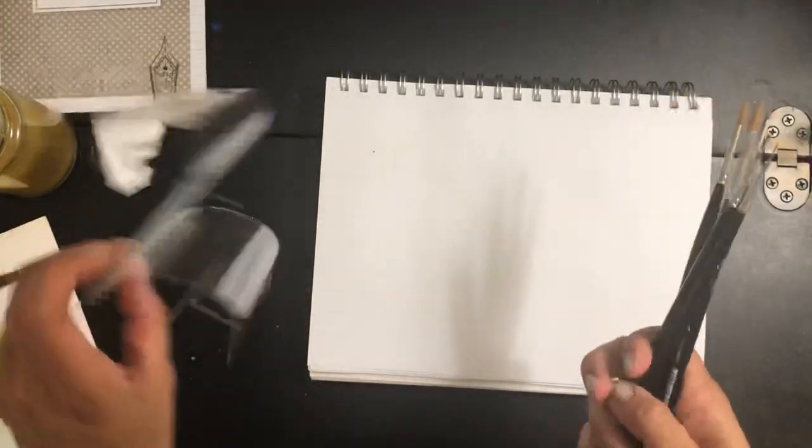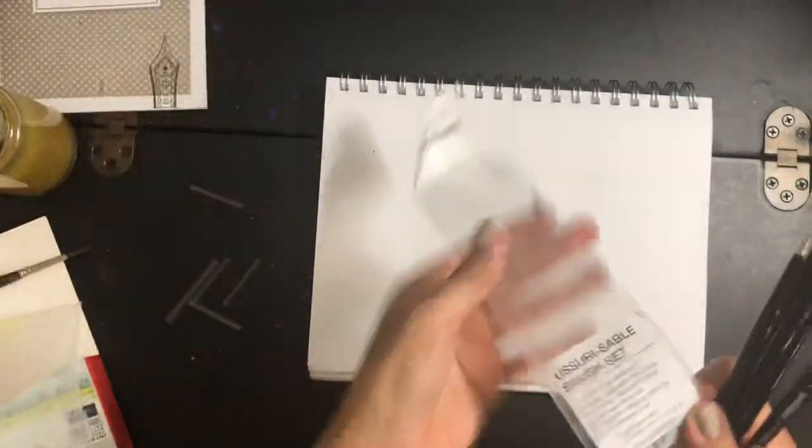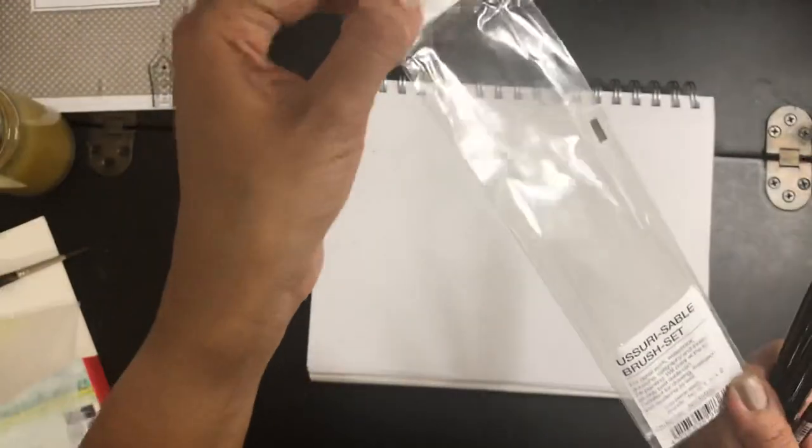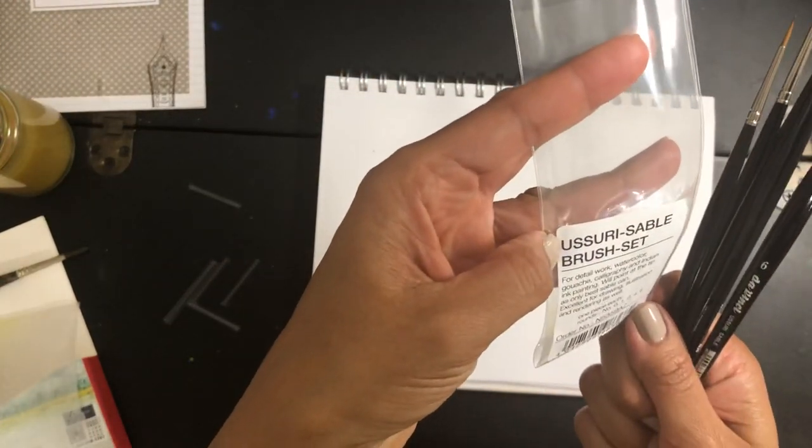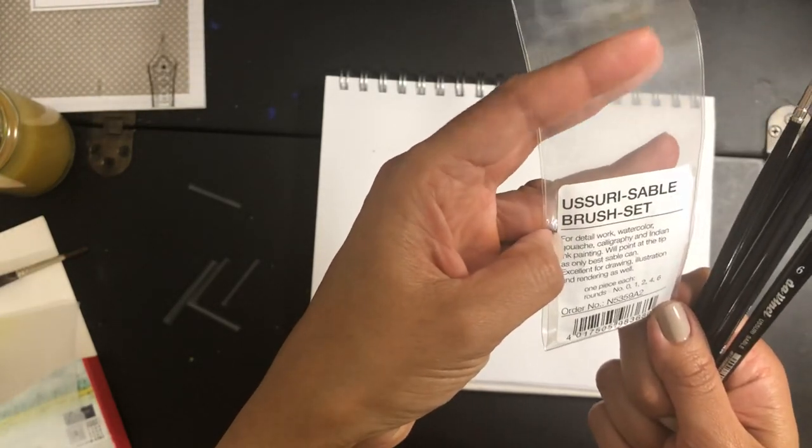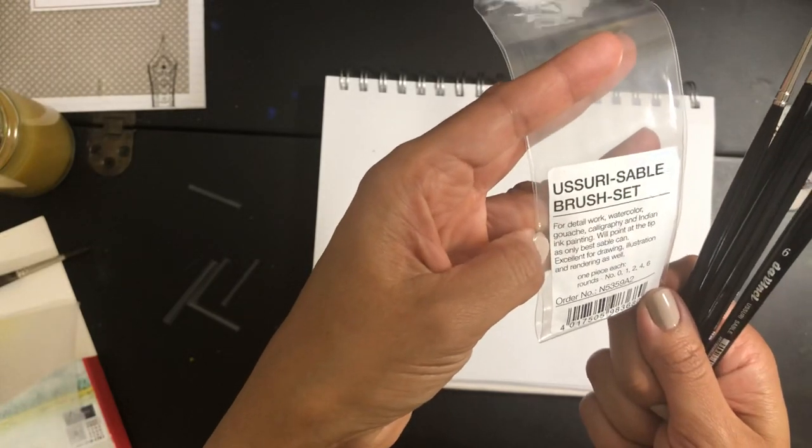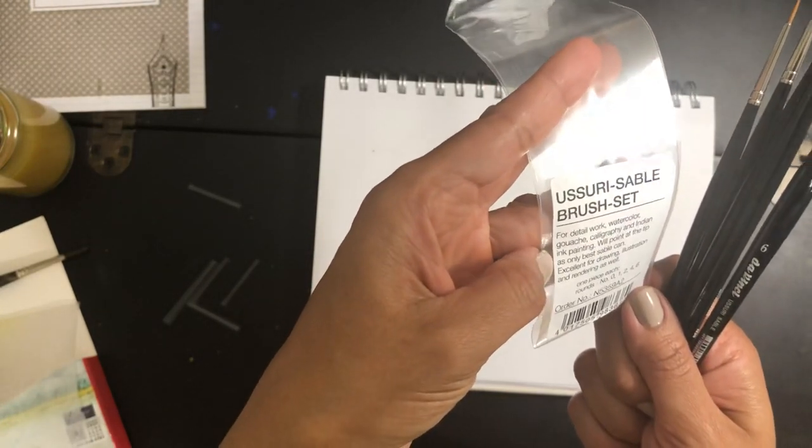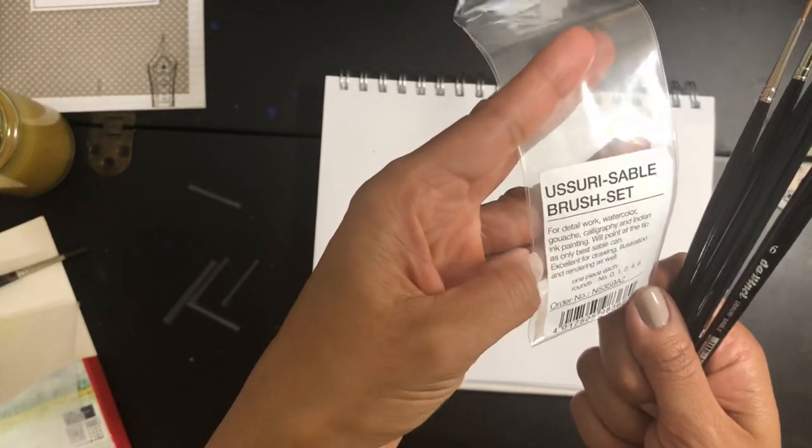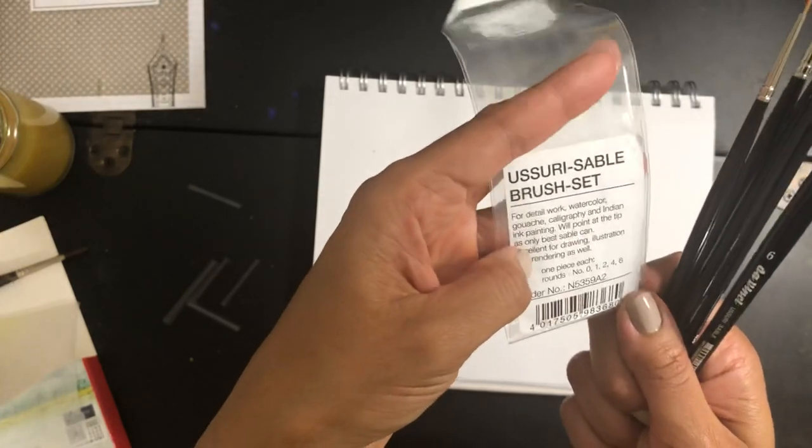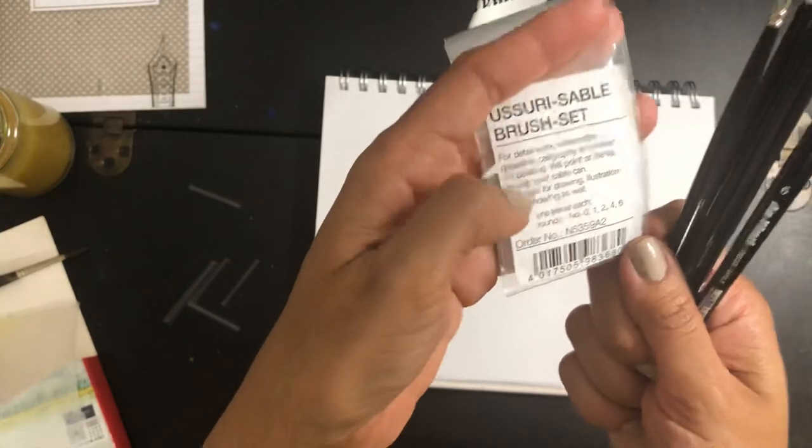But that's what you get. They come in this little flimsy plastic cover. It says 'Usuri Sable Brush Set for detailed work, watercolor, gouache, calligraphy, and Indian ink painting. Will point at the tip as only best sable can. Excellent for drawing, illustration, and rendering as well.' So it says that it comes with round number 0, 1, 2, 4, and 6.